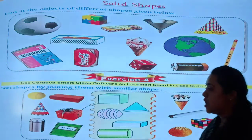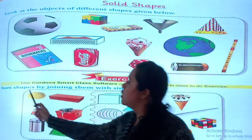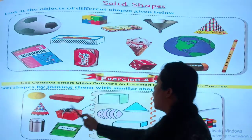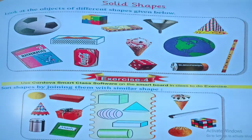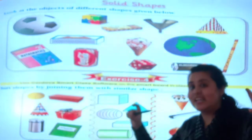So students, now we will be solving our Exercise 4. Sort shapes by joining them with the similar shape. In this exercise, we are given 5 shapes: square, cone, cylinder, rectangular, and circular. We have to match each object to its similar shape.